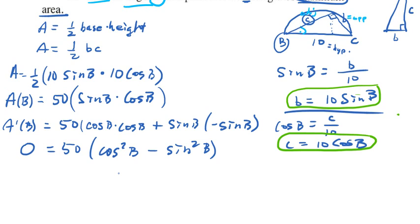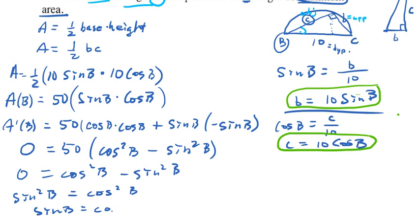Instead, what we need to do is let this equal zero and find the value for B to find our critical numbers. So if we divide both sides by 50, we get cosine squared B minus sine squared B equals zero. If I bring sine squared over, it becomes positive. Take the square root of both sides, I get sine B equals cosine B.